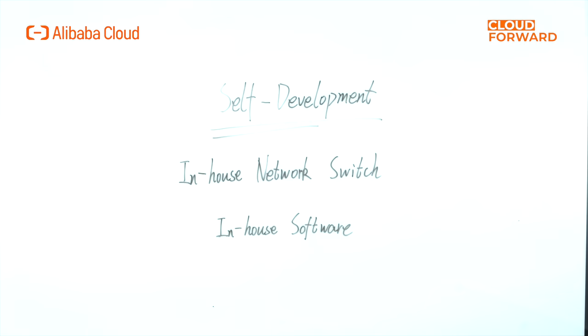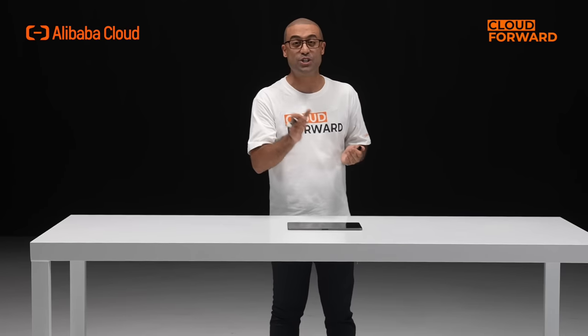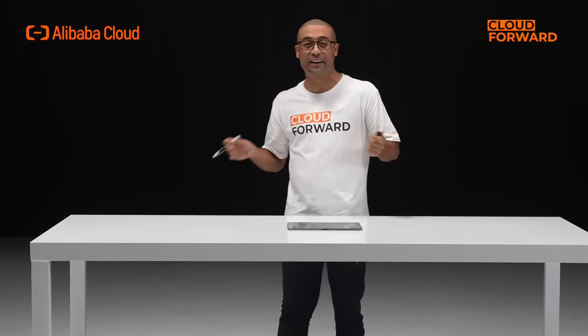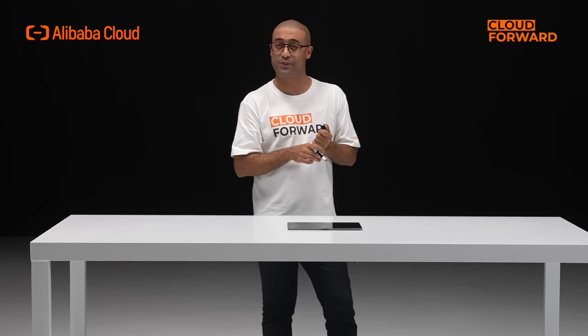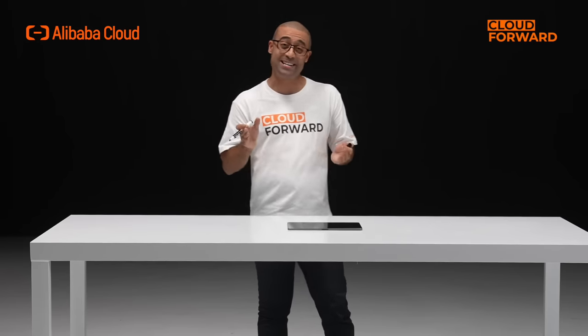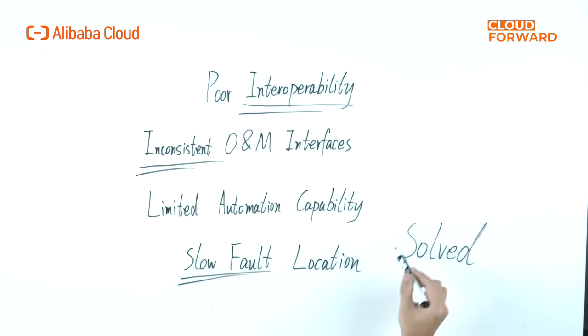This makes it difficult to evolve and innovate at the speed and scale we want. In order to meet the challenging requirements of better availability, high stability, better operating efficiency, and competitive cost, we are committed to controlling our own destiny. We collaborate with networking JDM partners to develop our own network switches, both hardware and software, enabling us to evolve network service much faster. Alibaba Cloud's in-house data center switch solves problems such as poor interoperability, inconsistent operation and maintenance interfaces, limited automation capability, and slow fault location.